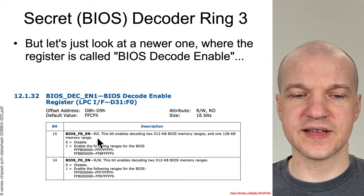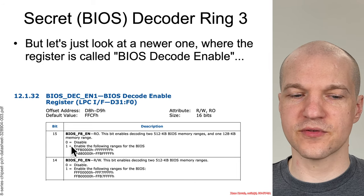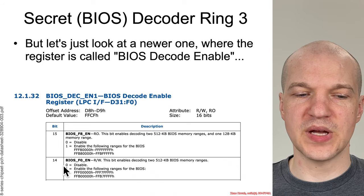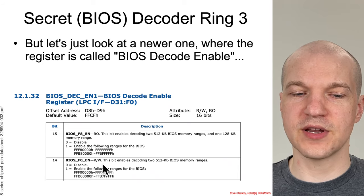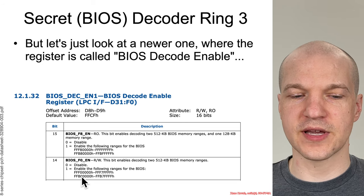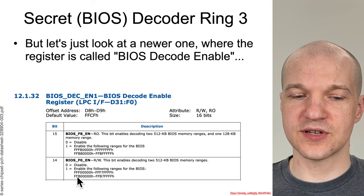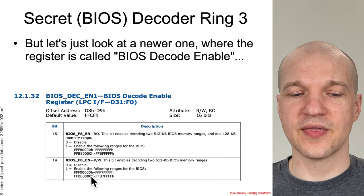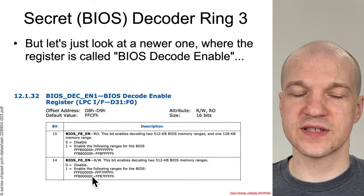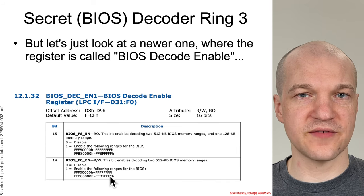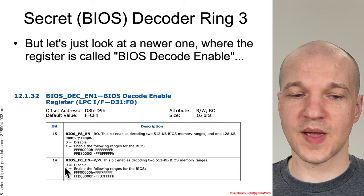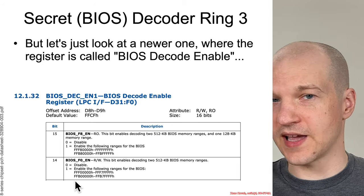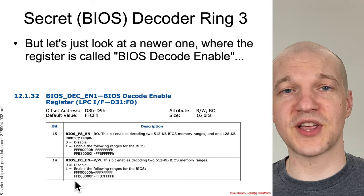What's interesting about this particular bit is that it says read-only. So even though there's a zero option to disable this mapping, you can't actually do that. But bit 14 is read-write. For the range from 0xFFF80000 to 0xFFF7FFFF, you can actually control whether or not that physical memory address maps into the SPI flash chip. If you toggle this bit to zero, looking at that physical memory will go from showing valid SPI flash content to nothing at all.